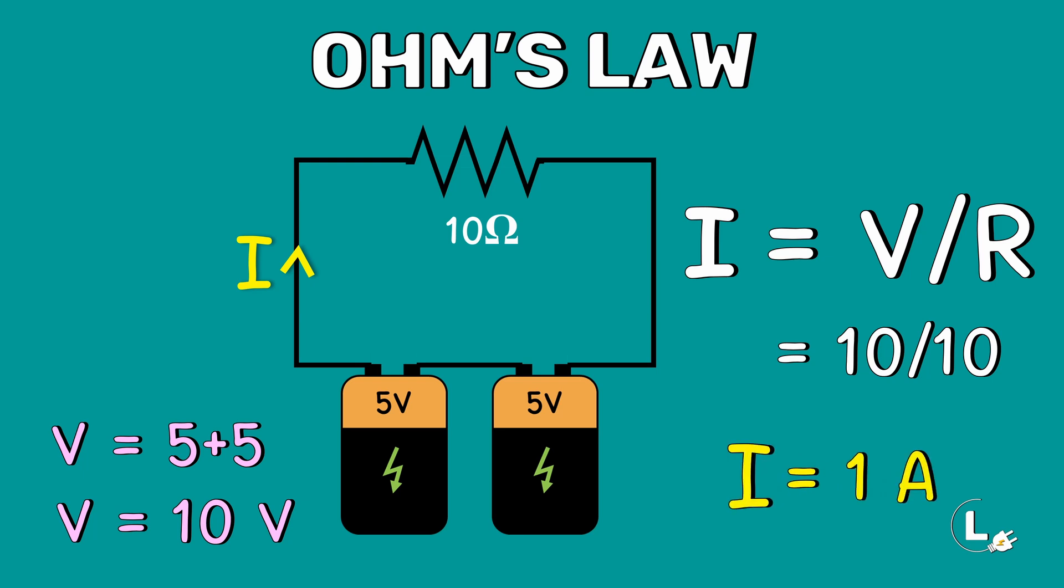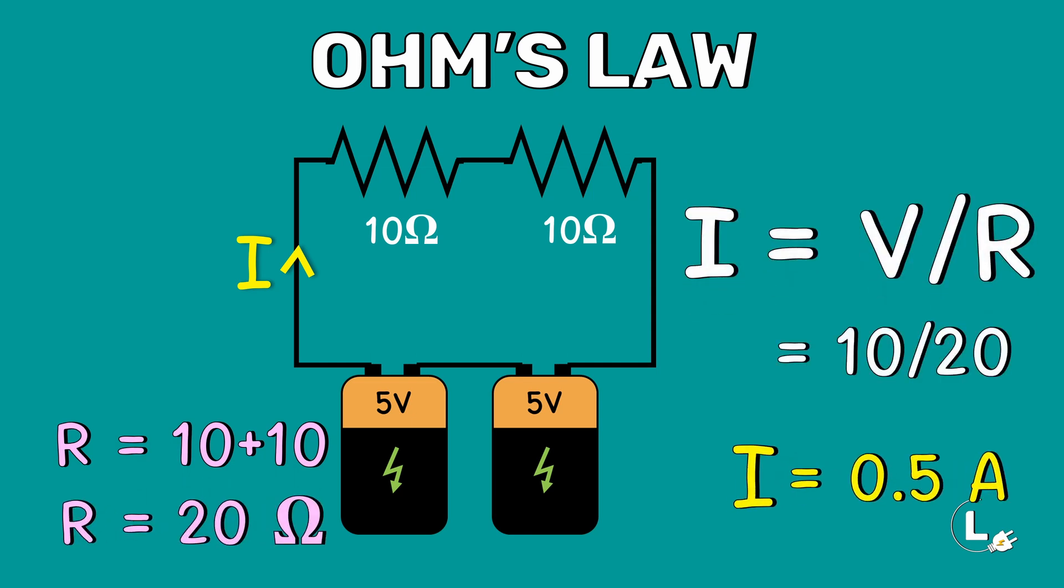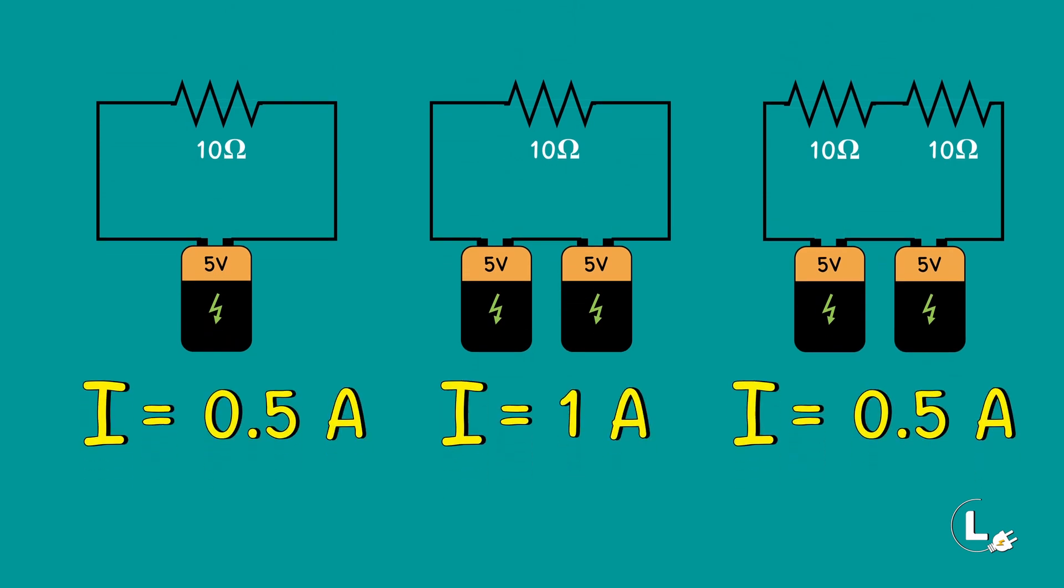What happens when we add a 10Ω resistor to this circuit? Since the resistors are connected in series, the resultant resistance value is 20Ω. Now, the current I is 0.5A. In all these three cases, we found the current value using Ohm's Law.